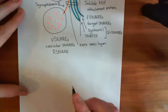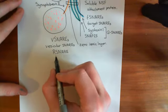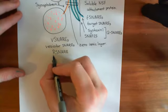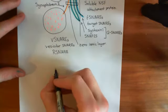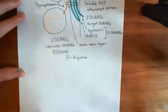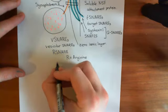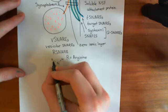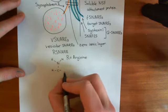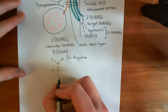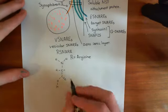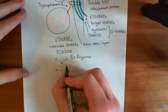Synaptobrevin-2 is called an R-SNARE because the amino acid it contributes into this zero ionic layer has the single-letter amino acid code R. R is the single-letter code for the amino acid arginine. Here is the structure of arginine: the amino group, the alpha carbon with a hydrogen, and then the carboxylic acid group — that's the generic amino acid structure common to all amino acids. The R group of arginine has a methylene group repeated three times.